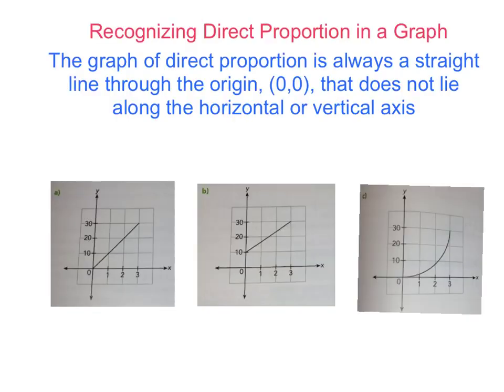The first thing we're going to do today is recognizing direct proportion in a graph. So the first definition that we're going to write down is, the graph of direct proportion is always a straight line through the origin (0,0) that does not lie along the vertical or horizontal axis. Please pause right now to write down this definition, as well as to draw these three graphs located down here.